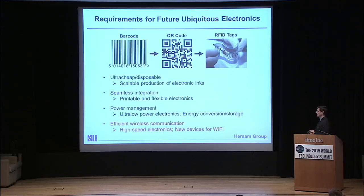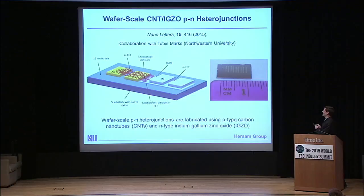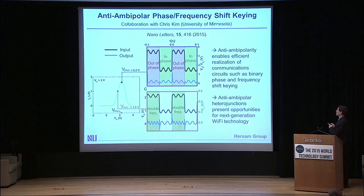The last thing we need is to communicate with the internet, which requires us to show that our printed electronic materials can be used at the frequencies required for Wi-Fi technology. In collaboration with the IBM TJ Watson Research Center, just north of Manhattan, we've been able to take our carbon nanotubes out of solution and realize 150 gigahertz operating transistors — sufficiently high for radio frequency wireless communication. We've also integrated carbon nanotubes with other materials such as indium gallium zinc oxide to make novel PN heterojunction devices, which can be fashioned into more sophisticated circuits such as phase and frequency shift keying circuits — foundational elements for Wi-Fi technology — realized using purely solution-based processing.